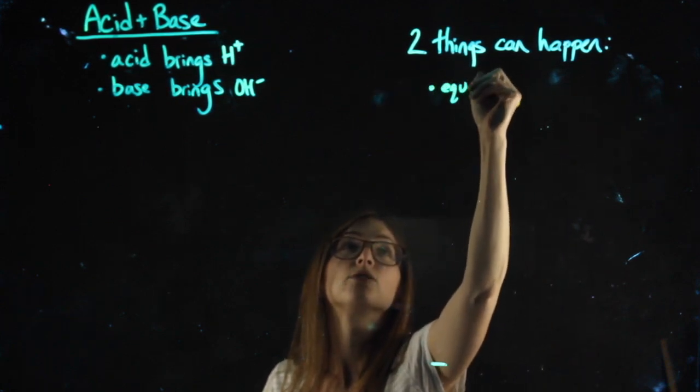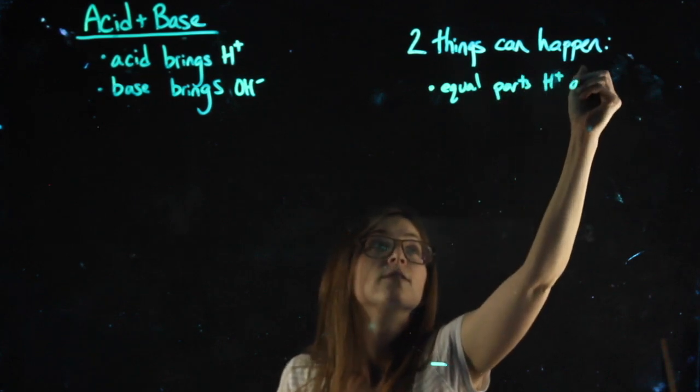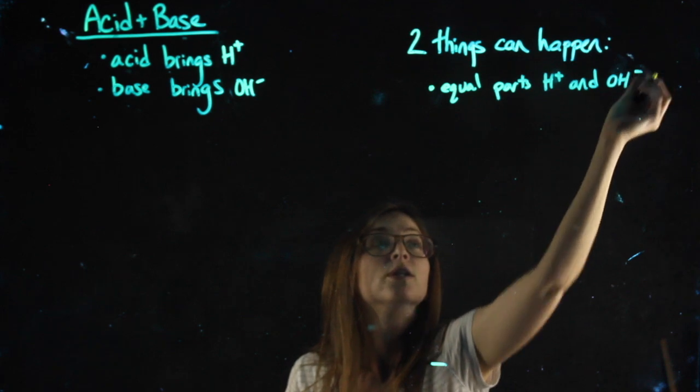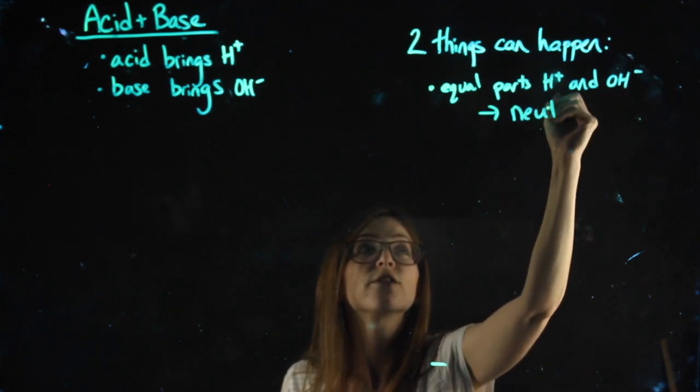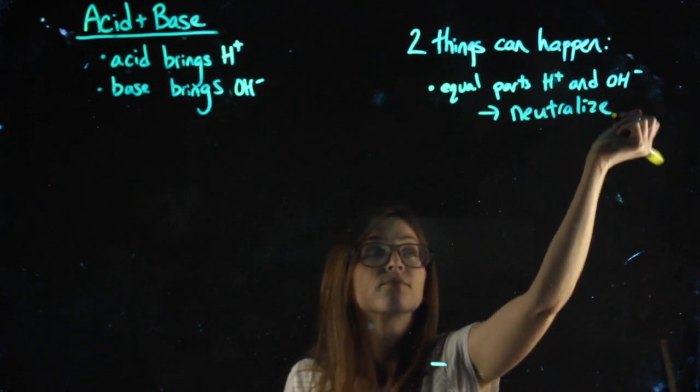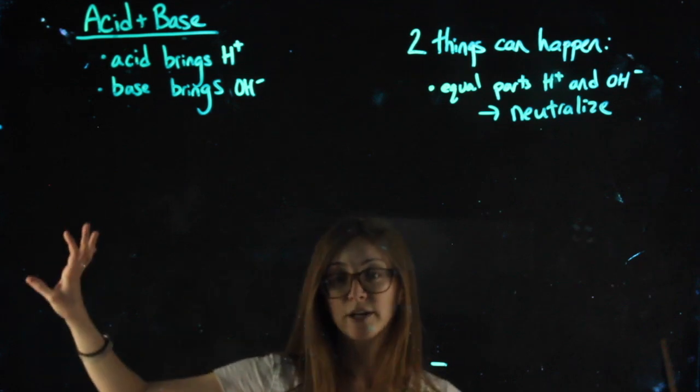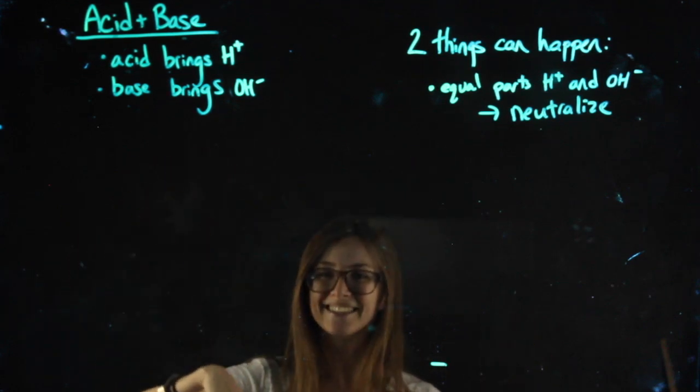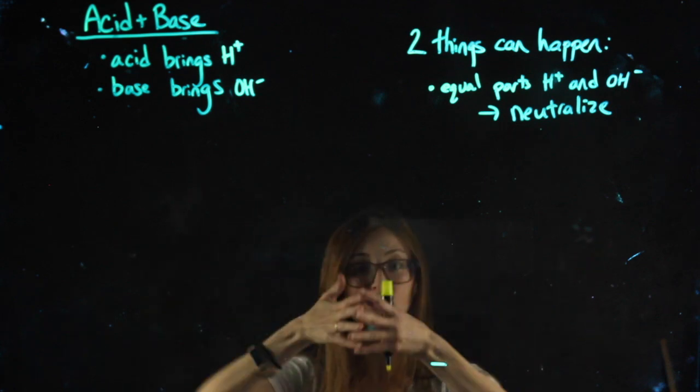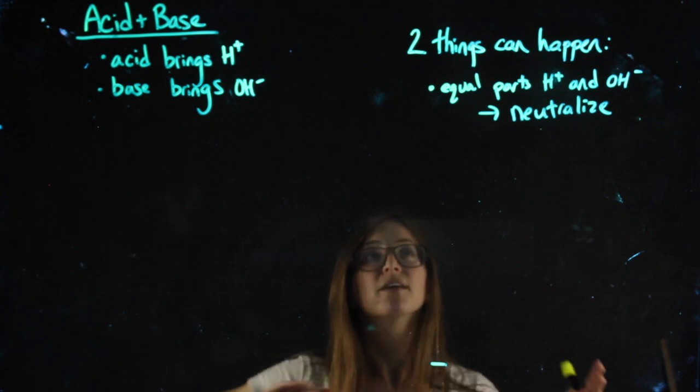So two things can happen. One is that we have equal amounts or equal parts H and OH, in which case they neutralize each other. That's a specific type of problem called a titration. I'm going to do a video about that as well. But hopefully that makes sense - that equal parts H and OH, there's nothing making it acidic, nothing making it basic.